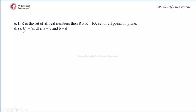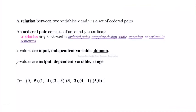If the ordered pair (A, B) equals (C, D), that means A equals C and B equals D — the corresponding elements must be equal for ordered pairs to be the same. The relation between two variables X and Y is a set of ordered pairs. A relation may be viewed as a set of ordered pairs, a mapping, a table, an equation, or written in sentences. The X values are the inputs, called independent variables or the domain, and Y values are outputs or the range.